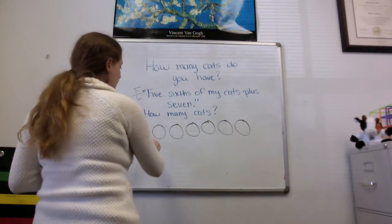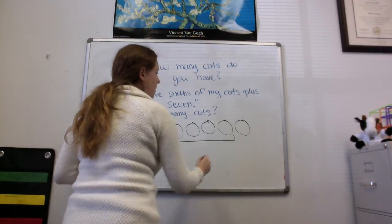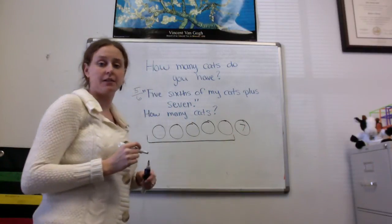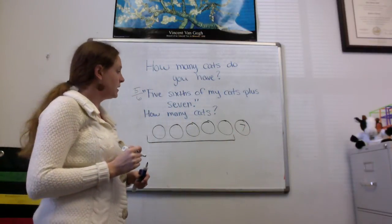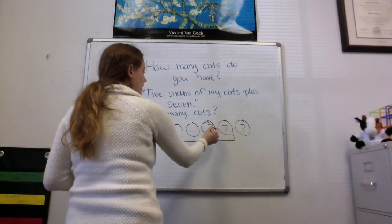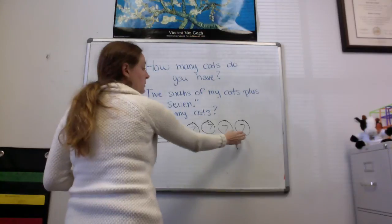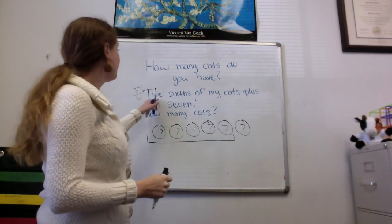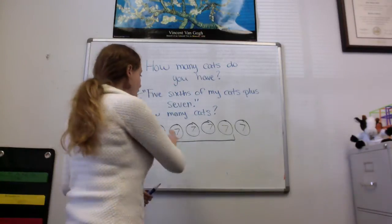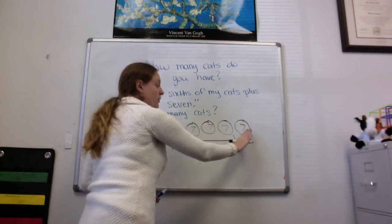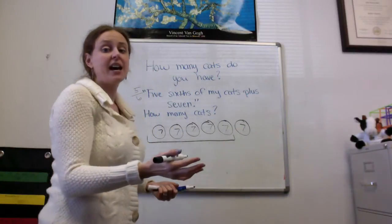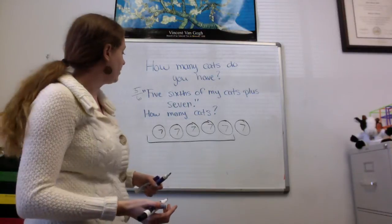Now 5 of those plus 7 equals the whole amount. So this guy has to be the 7th. So if this one is 7, all of them have to be 7. The reason I know that this one had to be 7 is because it said 5/6 of my cats plus 7 is the whole amount. All of them together are the whole. So there's my 5/6. And so this last 1/6 has to be 7 because that was the part that was added on.